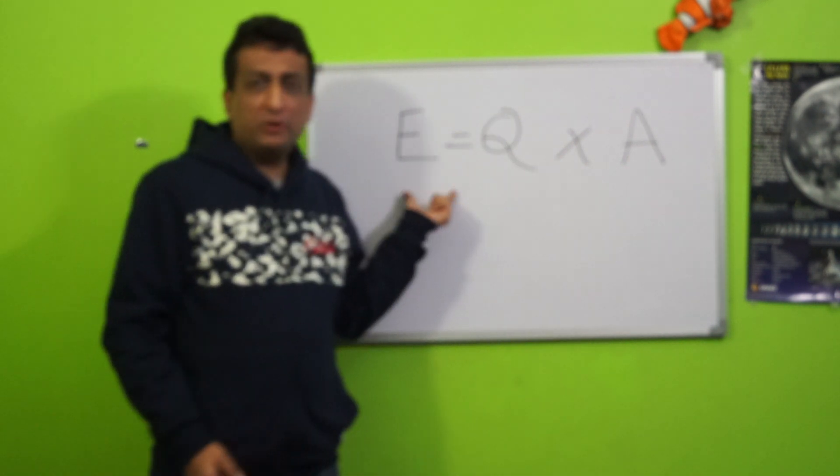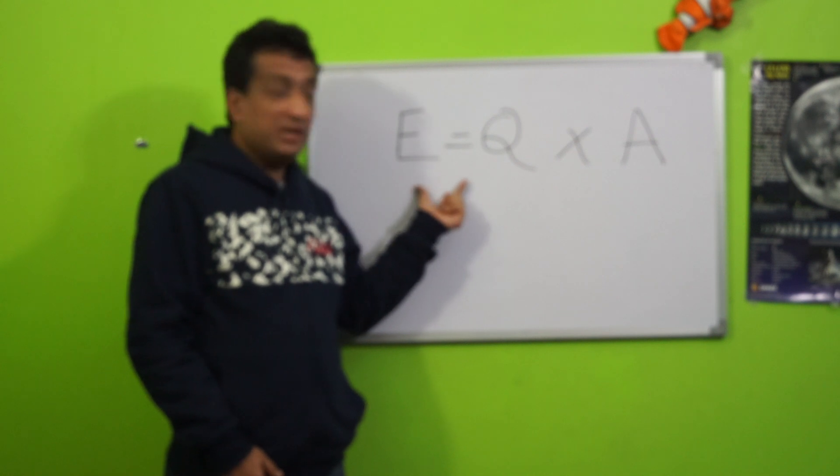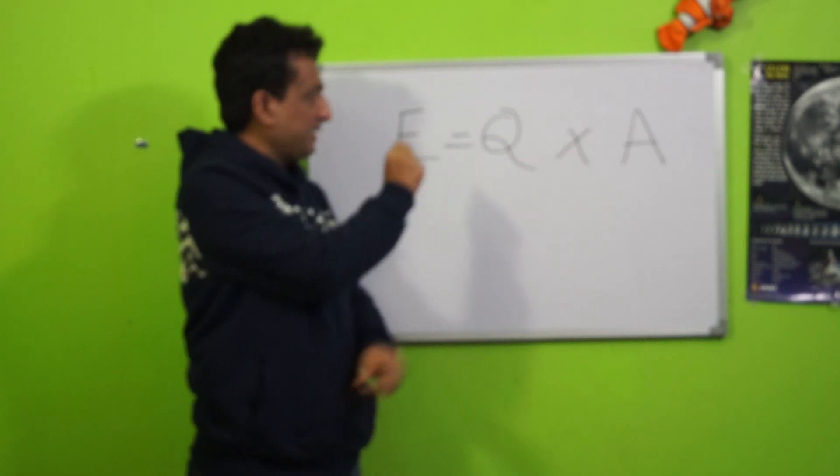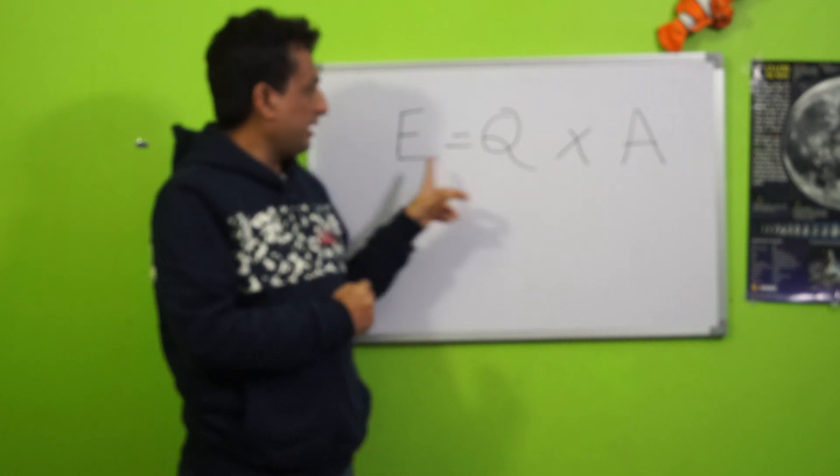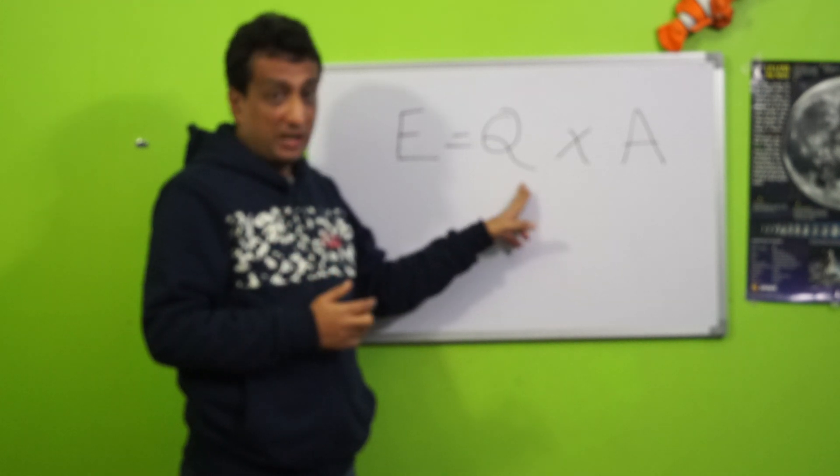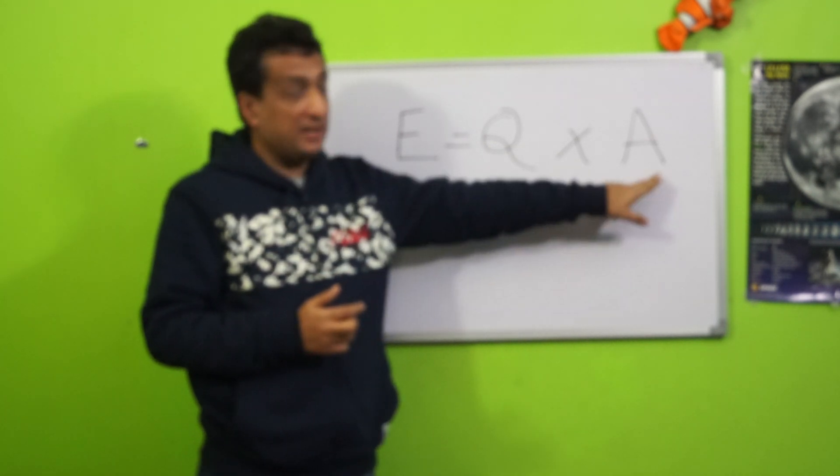As part of the launch video, I will start with a basic change equation: E = Q × A, where E stands for effectiveness of change, Q stands for quality, and A is acceptance.